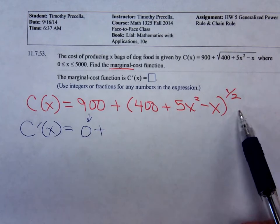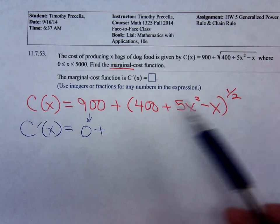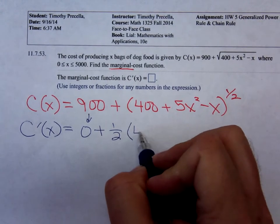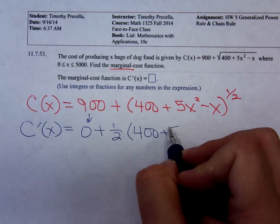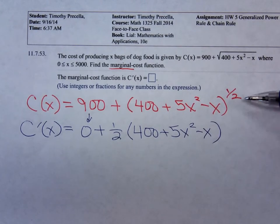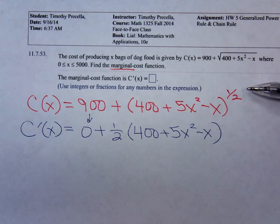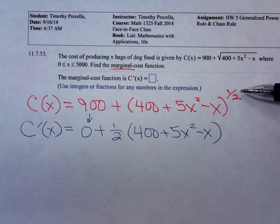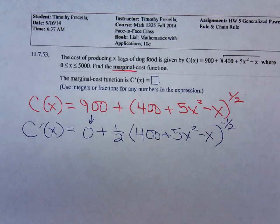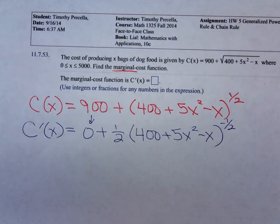Here using the generalized power rule we take that one-half, bring it down. We leave the inside function alone. What do we do to the one-half to get the new exponent? Subtract one. One-half minus one is negative one-half.